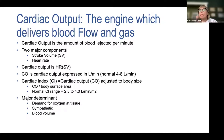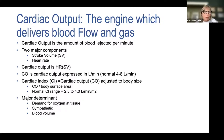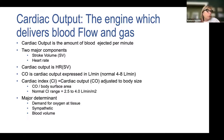Cardiac output is heart rate times stroke volume, expressed in liters per minute. Normal cardiac output is 4 to 8 liters per minute. The goal is to optimize cardiac output to meet tissue oxygen demand — reducing metabolic acidosis and improving base deficit, anion gap, and serum bicarb. Cardiac index, adjusted to body surface area, gives a more meaningful indicator of blood flow dynamics.